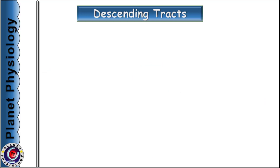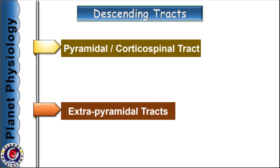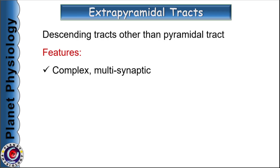Descending tracts transmit motor signals from various parts of the brain to the spinal cord and clinically they are of two types: pyramidal and extrapyramidal tracts. Pyramidal tracts deal with voluntary movements and I have already discussed pyramidal tracts in detail in my earlier video. Our focus today is on extrapyramidal tracts, which are responsible for involuntary subconscious movements. In simple words, extrapyramidal tracts are the descending tracts other than pyramidal tracts.